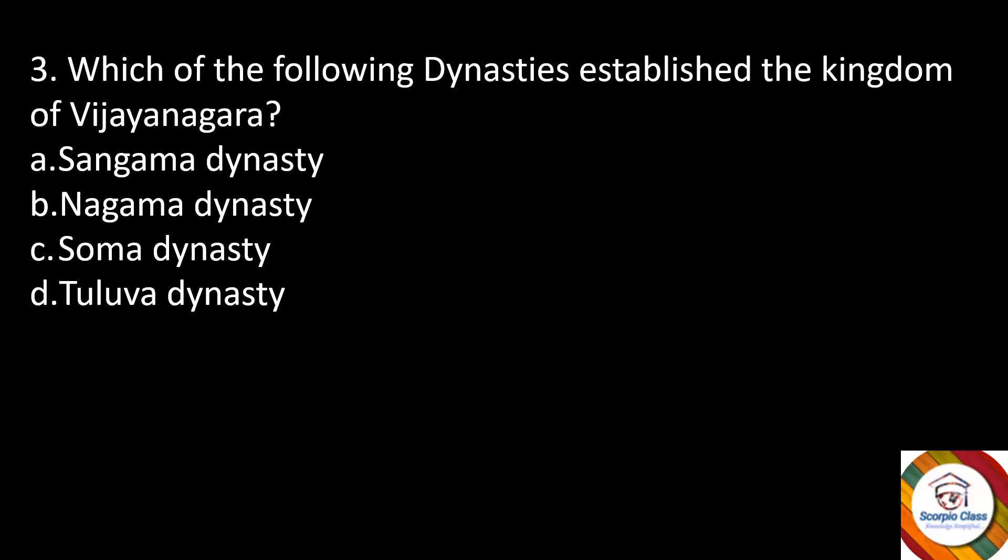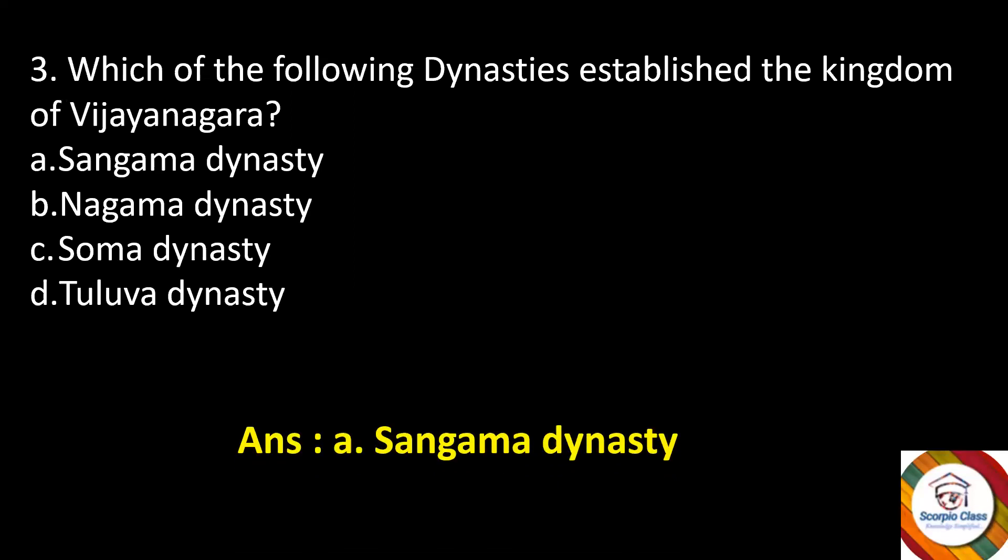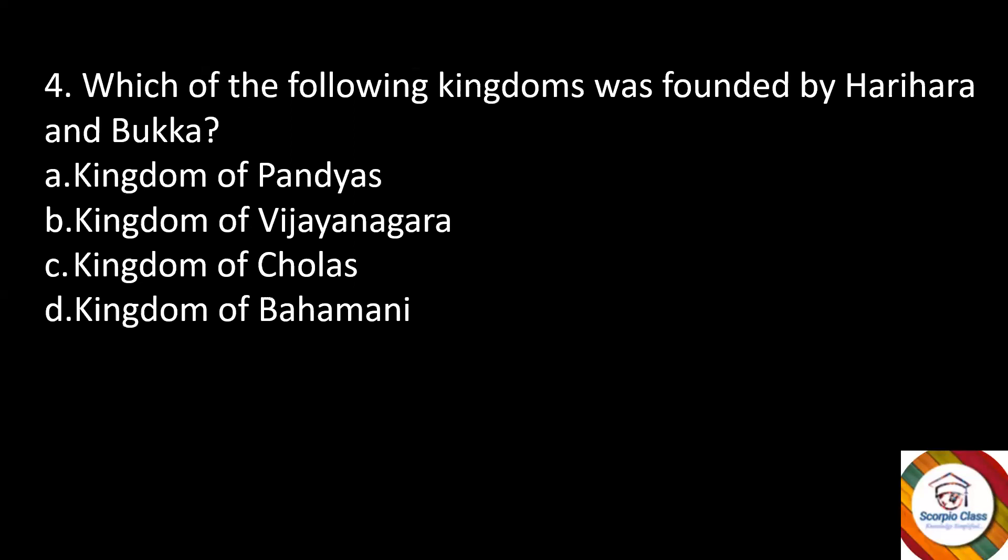Next question: which of the following dynasties established the Kingdom of Vijayanagara? Options are Sangama Dynasty, Nagama Dynasty, Soma Dynasty, or Tulua Dynasty. The right answer is option A — Sangama Dynasty.